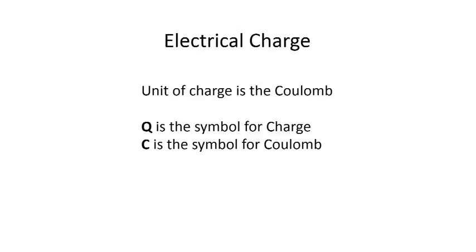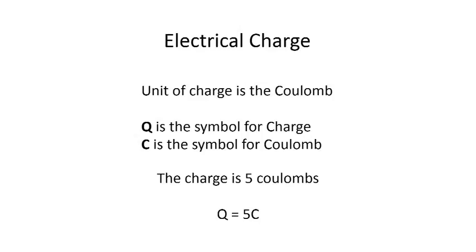Let's start with electrical charge. The unit of charge is the Coulomb. Q is the symbol for charge, and C is the symbol for Coulomb. In a sentence you would say the charge is 5 Coulombs, or you can write it as Q equals 5C.